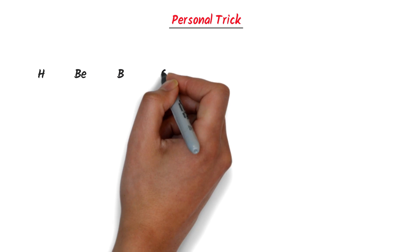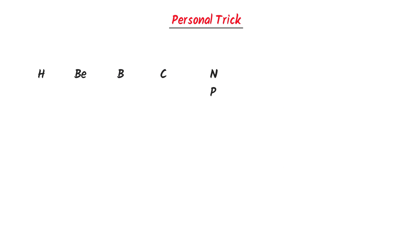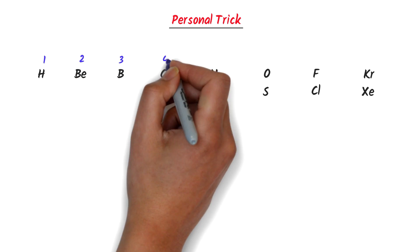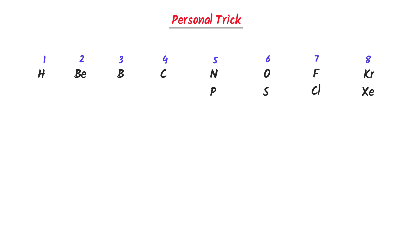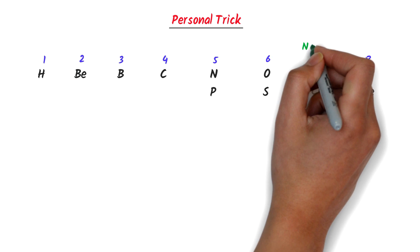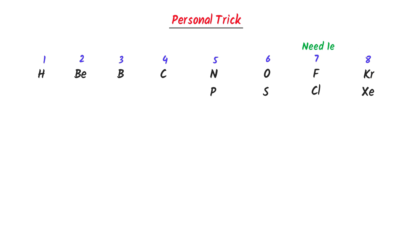Firstly, I write some common atoms like hydrogen, boron, carbon, nitrogen, phosphorus, oxygen, sulfur, chlorine, bromine, krypton, and xenon. Secondly, I write their respective group numbers. Now listen carefully: group 7 elements need 1 electron, group 6 elements need 2 electrons, group 5 elements need 3 electrons, and group 4 elements need 4 electrons to complete their respective octet rule.